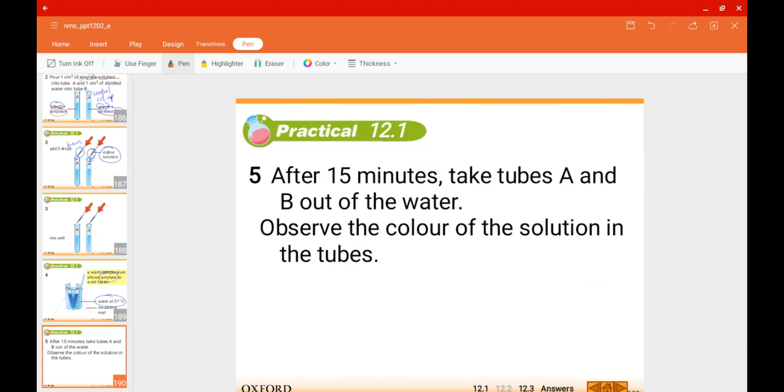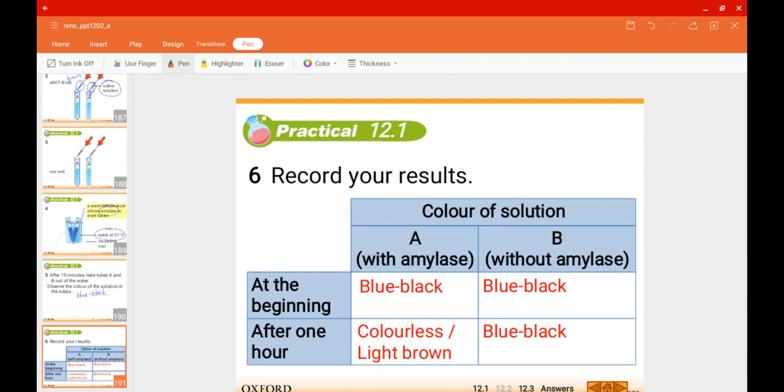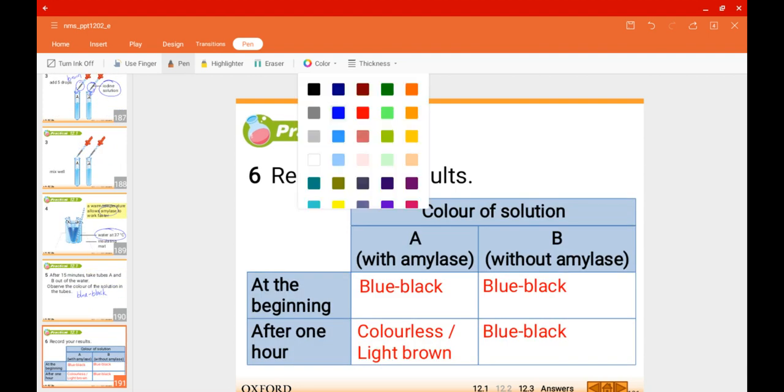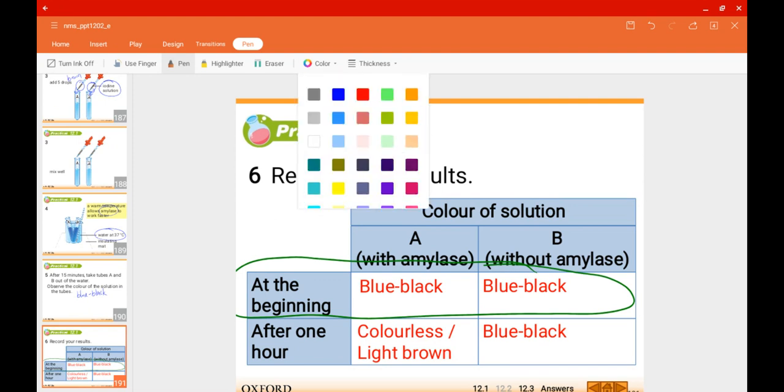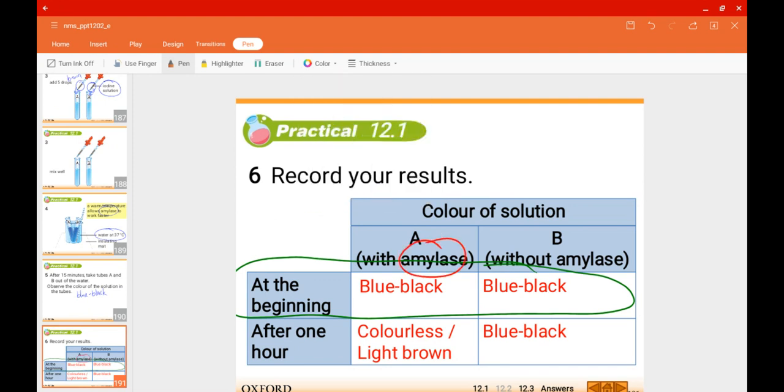Roughly after 15 minutes, we will observe what would happen to the color of the solution. At this moment, it should be blue-black because both test tubes have iodine solution added to starch. Let's see the results. I've already had the results ready for you. In both test tubes it should be blue-black in color. Test tube A has the enzyme, whereas test tube B just has distilled water.